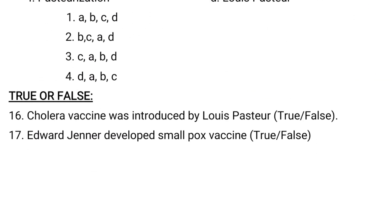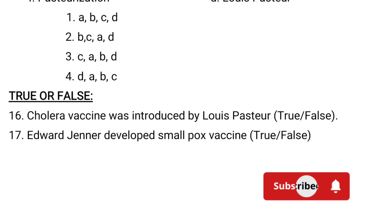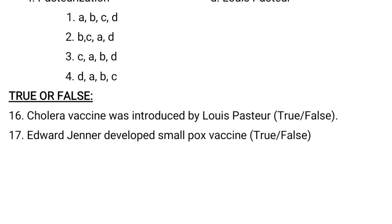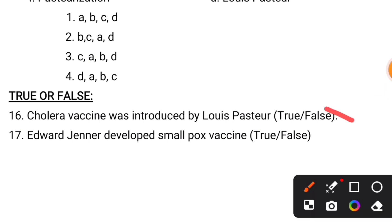The last category is true or false. First statement: the cholera vaccine was introduced by Louis Pasteur — this is false. The cholera vaccine was not invented by Louis Pasteur; it was invented by Robert Koch. Second statement: Edward Jenner developed the smallpox vaccine — this is true. Edward Jenner developed the vaccine for smallpox disease.